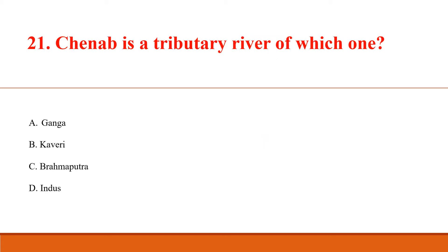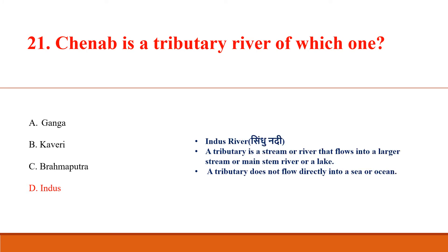Chenab is a tributary river of which one? Answer D: Indus river (Sindhu Nadi). A tributary is a stream or river that flows into a larger stream, mainstream river, or a lake. A tributary does not flow directly into a sea or ocean.